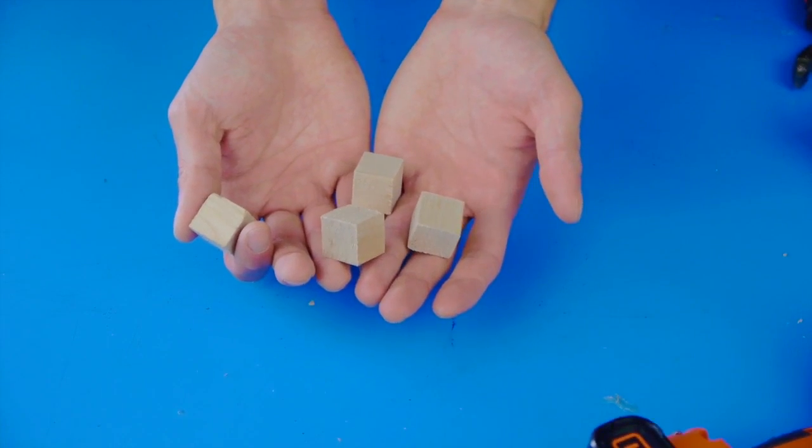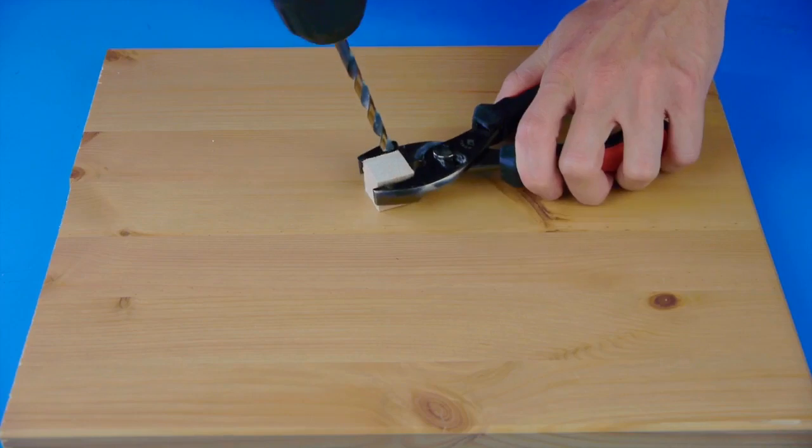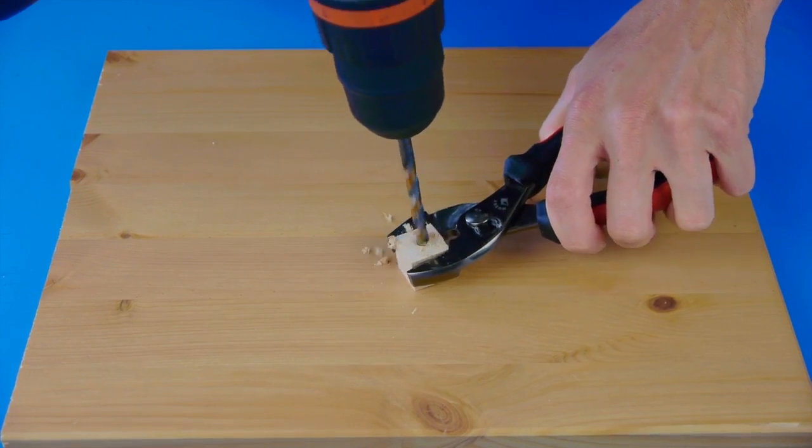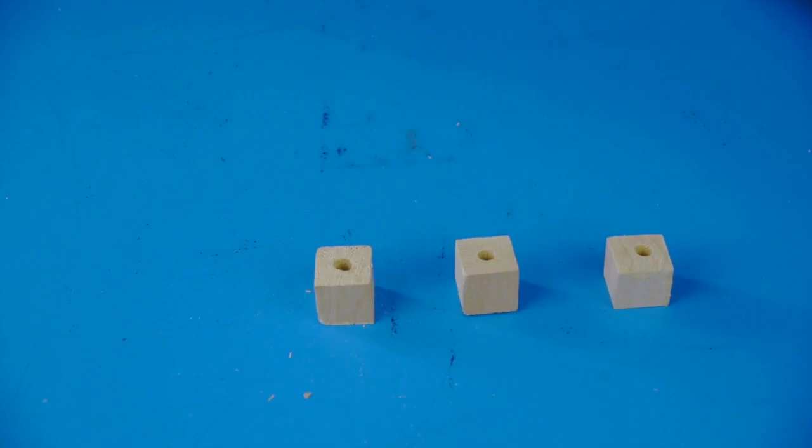Cut four cubes from the square dowel with the saw, and then with a pair of pliers, hold the cube and drill a hole that's slightly larger than a quarter of an inch. Drill holes like this into all four cubes.